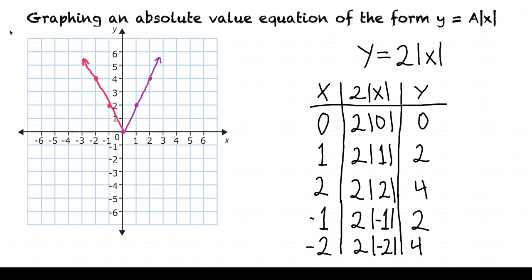How do I know where the vertex is? In general, whenever we have an absolute value function of the form y equals a times the absolute value of x, the vertex is always (0, 0). In more advanced functions this is different, but whenever it's just a times the absolute value of x — like for example 2 times the absolute value of x — the vertex is always (0, 0).